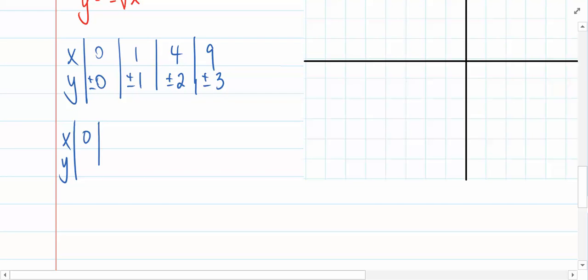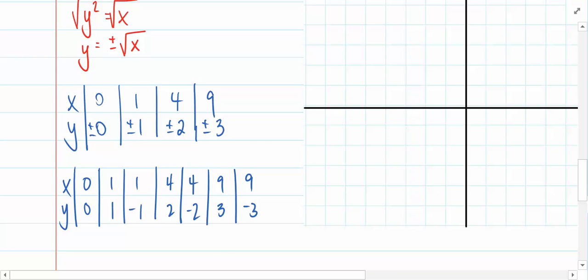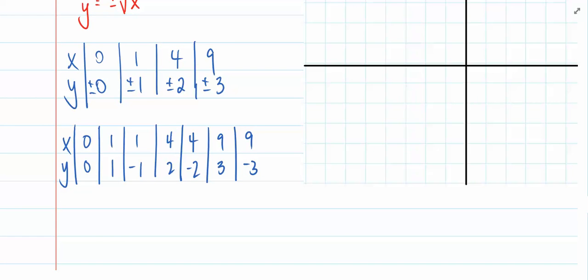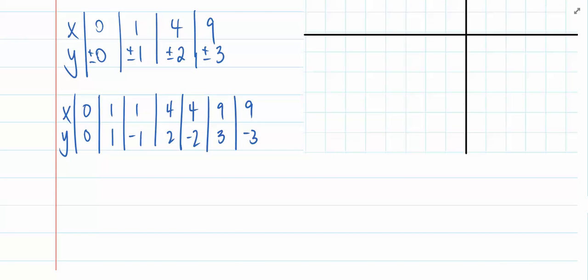Another way of looking at this is 0 maps to 0, 1 maps to 1, but 1 also maps to negative 1. 4 maps to 2, 4 maps to negative 2, 9 maps to 3, 9 maps to negative 3. So the question you have to ask yourself is does this represent a function? Does this table represent what a function should look like? Think about that for just a moment.